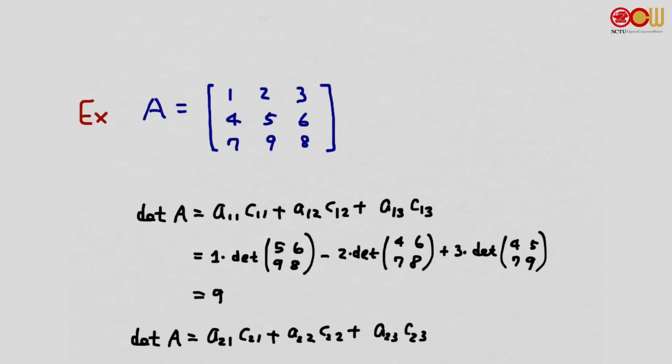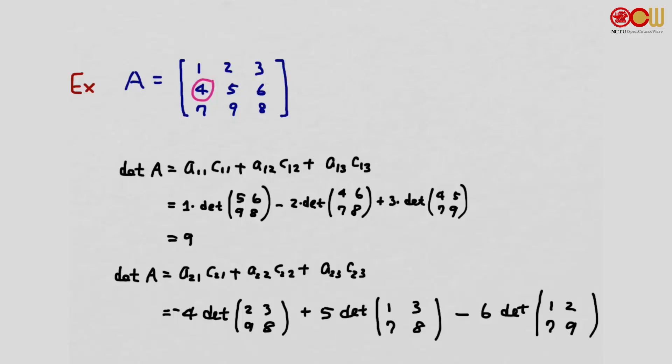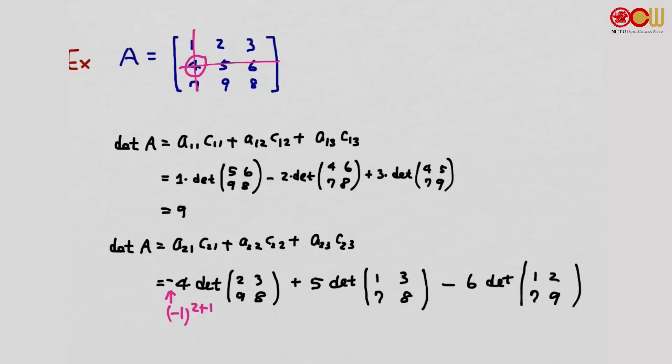Or we can consider cofactor expansion along the second row. We put down A21, which is 4. And C21 has the determinant of the remaining submatrix 2, 3, 9, and the factor (-1)^(2+1) at the front, so we get this minus 1 here. Similarly, we have other terms. We can verify that the result is the same, equal to 9.